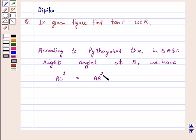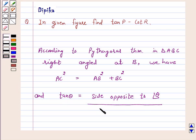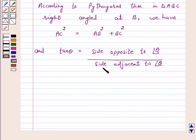That is AC square is equal to AB square plus BC square. And tan theta is equal to side opposite to angle theta upon side adjacent to angle theta.